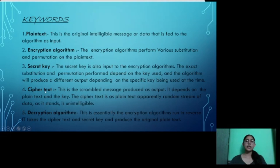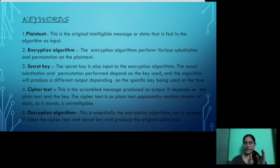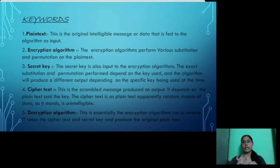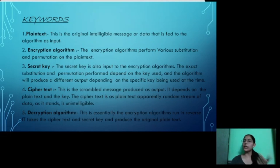Next is ciphertext. After using the encryption algorithm on plain text — for example, A, B, C — the output is called ciphertext. So A, B, C converted to 1, 2, star sign is our ciphertext. The decryption algorithm is the opposite of the encryption algorithm: it takes the ciphertext and decodes and decrypts it back.